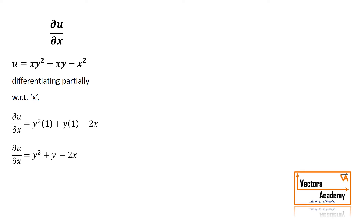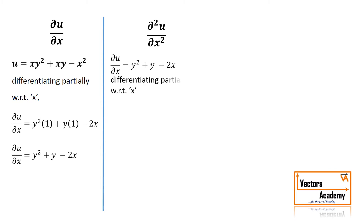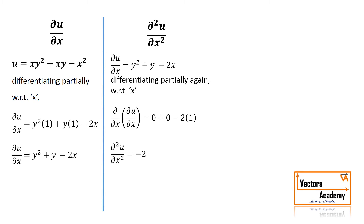We have already seen how to take the partial derivative of u with respect to x. Now let's see how to take higher order derivatives. Suppose we need to find del squared u upon del x squared. We already have the first order derivative, so we differentiate again partially with respect to x, treating y as constant. The derivative of the first two terms is 0, and the derivative of minus 2x is minus 2. Hence the second order partial derivative of u with respect to x equals minus 2.